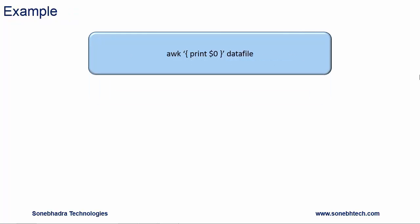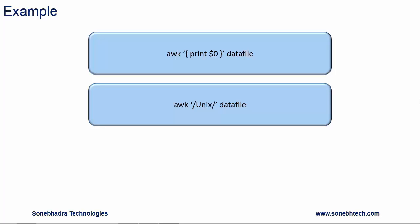Let's see some examples. First: awk, command, data file - pattern is not used, so the command will be applied on each line of the data file. The command is print $0. Print is used to print the text and $0 represents the entire line. Second example: awk, pattern, data file - action or command is not used, so the pattern will be applied and it will display the lines of the data file which contain the pattern text unix.